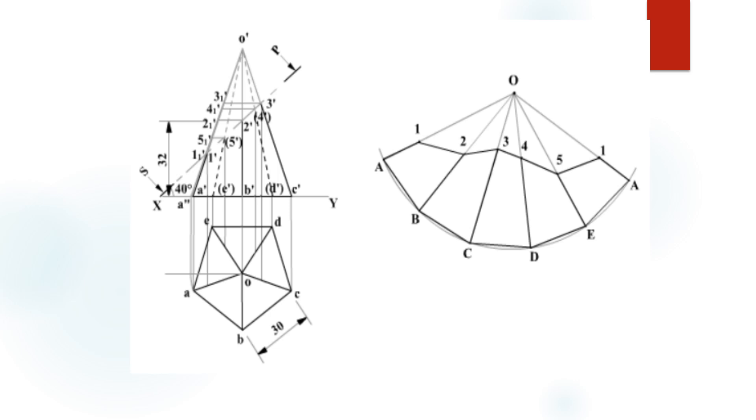In this problem, we have to draw the development of the pentagonal pyramid. For this, we have to first draw the front view and top views of the pentagonal pyramid and then section the front view in the given position. Unlike previous problems where we only drew the development, here we have to draw both the section of solids as well as the development of surfaces.